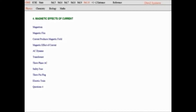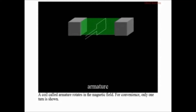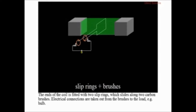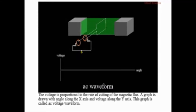Let's see the AC dynamo. In the EasyLab dynamo simulation, a uniform magnetic field is provided by a magnet. A coil called the armature rotates in the magnetic field. Electric connections are taken out to the load using slip rings and graphite brushes. When the armature rotates, the coil cuts the magnetic field and voltage is induced across the load.